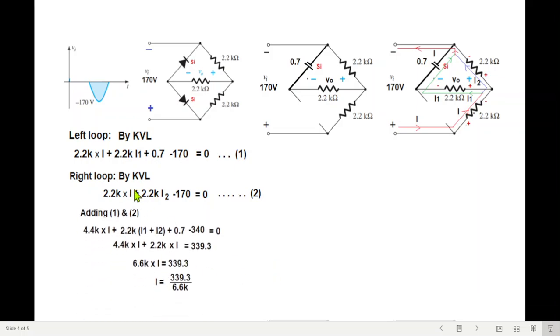So two equations we got. Now we'll add them. Adding and again, I1 plus I2 is replaced with I solving for I. This is our current for the negative half cycle. Now putting this value of current again in equation number 1. So putting in equation number 1 and simplifying, we get this output also 56.2V and it is positive. Keep in mind.